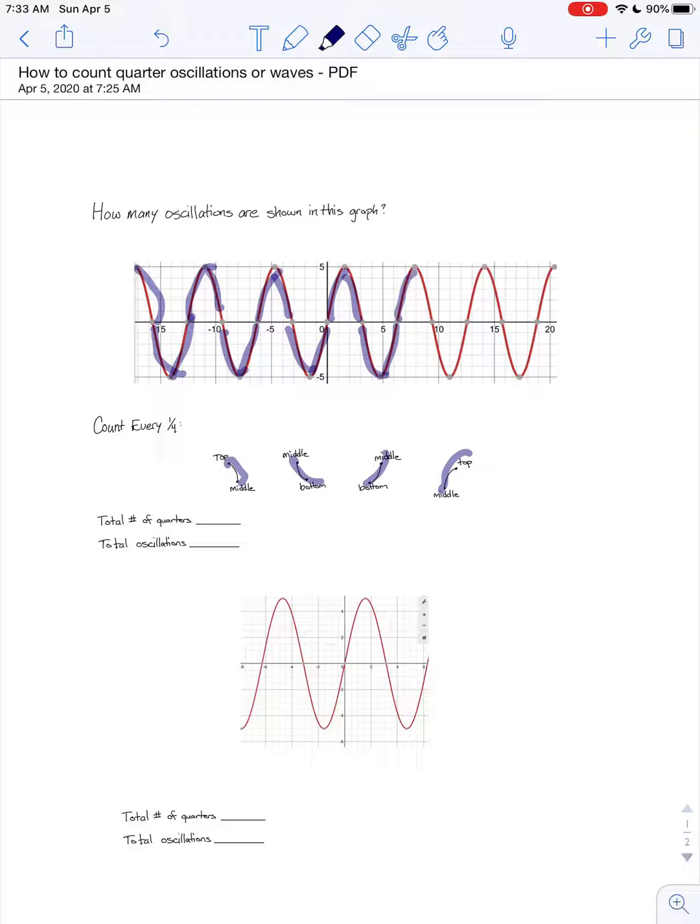13, 14, 15, 16, 17, 18, 19, 20, 21, 22, 23, 24. 24 quarters. And of course 24 quarters is 6 whole waves or 6 whole oscillations.